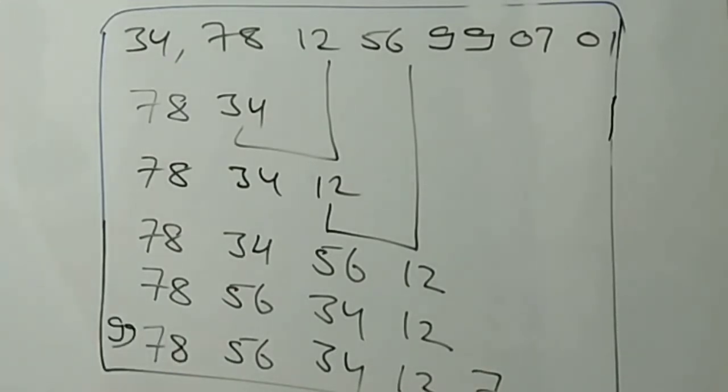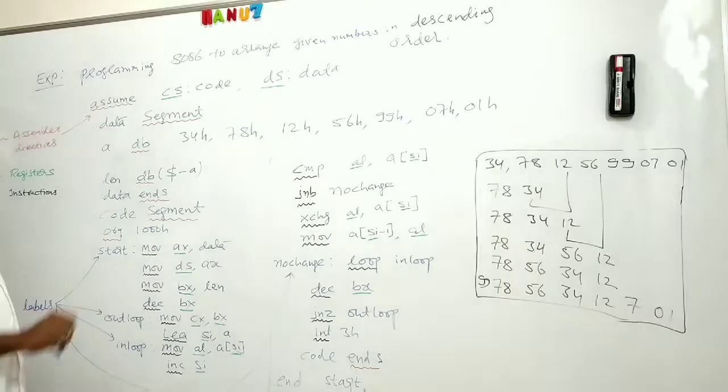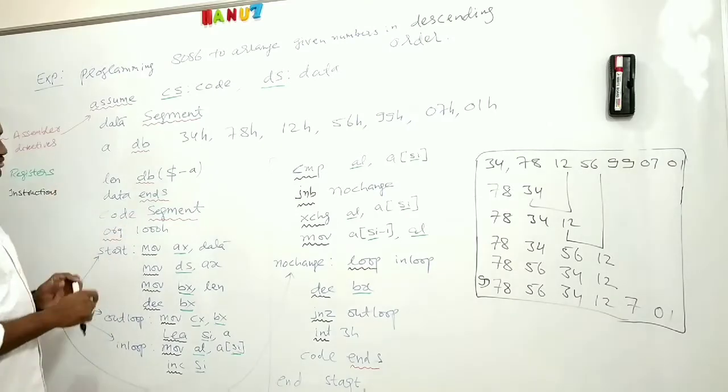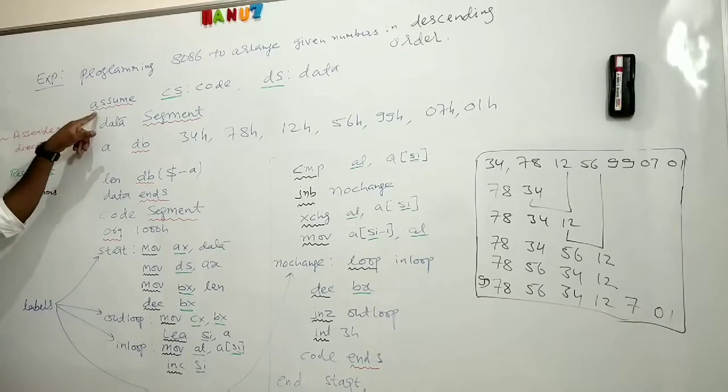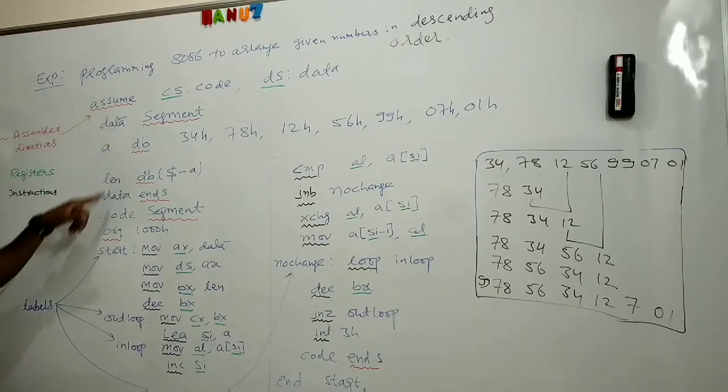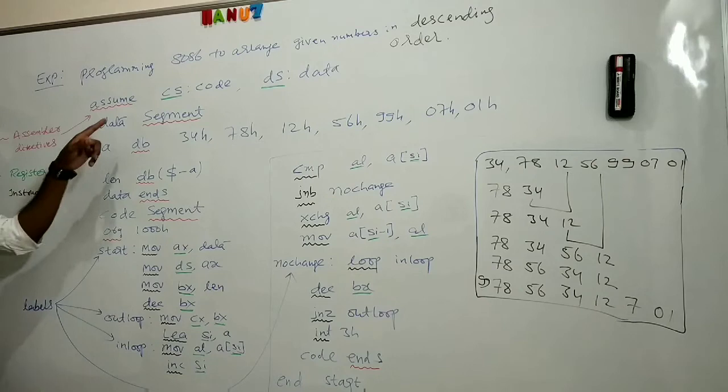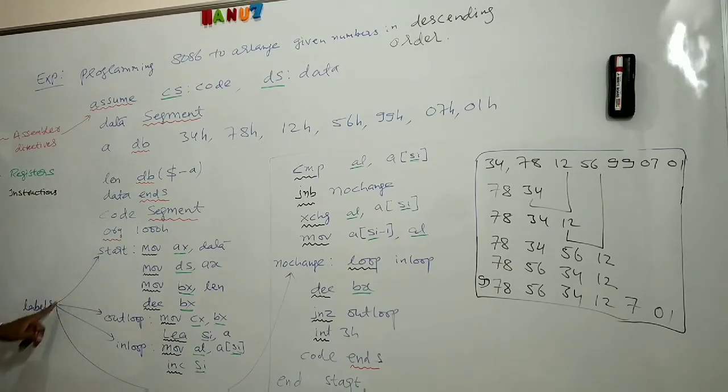Like this numbers will be arranged in a descending order. So in order to implement that logic we need a program like this. As it is clear that all the underlined red color underlines are assembler directives. Green color underlines are registers. Black color underlines are instructions and these are the labels.